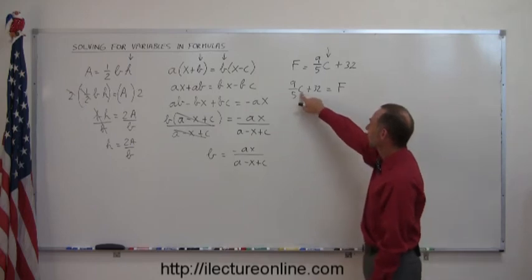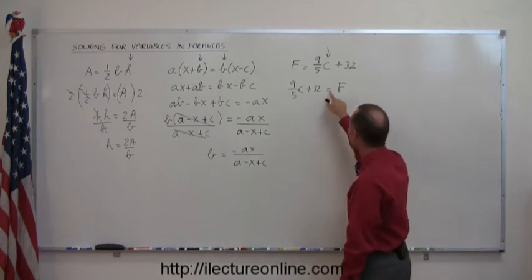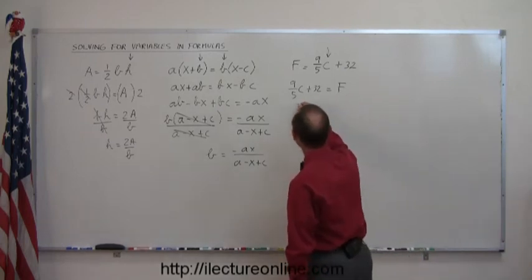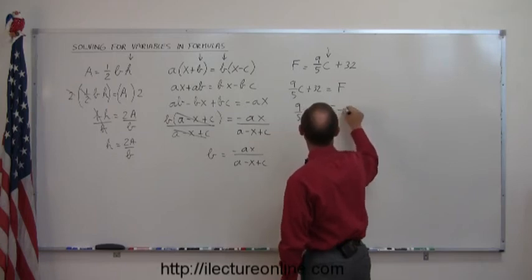Since I'm solving for C, I want to get rid of this 32, so I'll move that to the right side. Since I only moved the 32 by itself, that sign will change. So now I have 9 over 5C is equal to F minus 32.